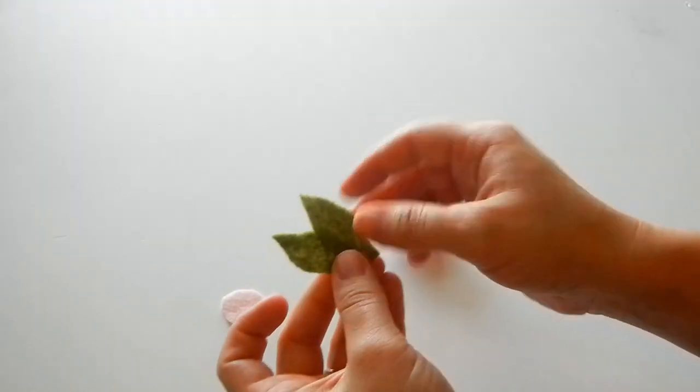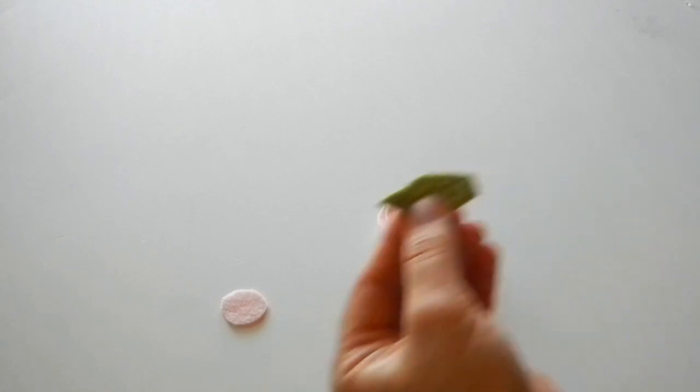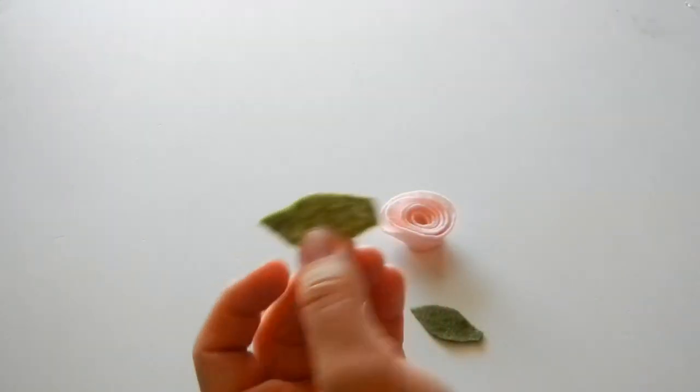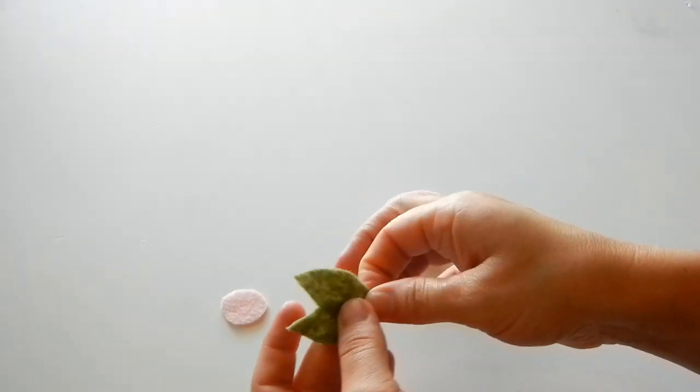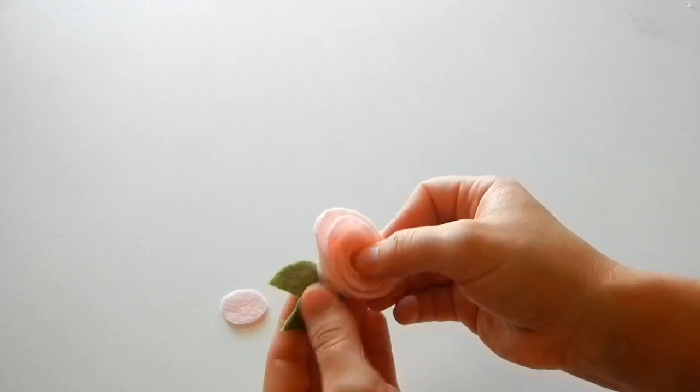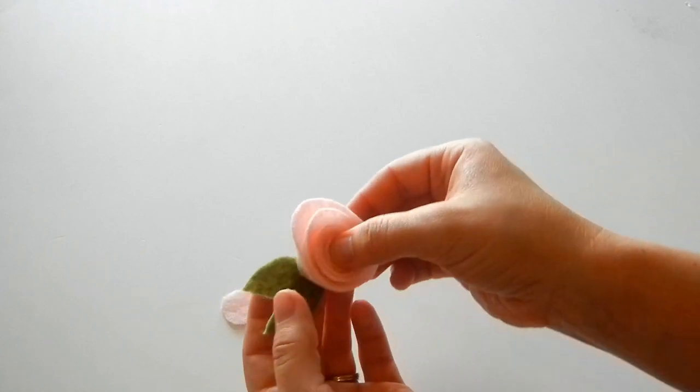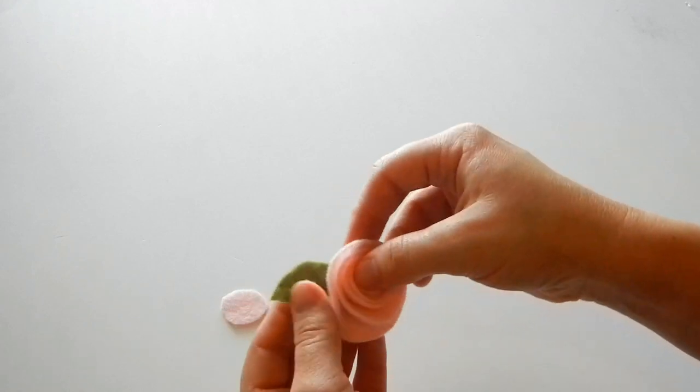So we have our two leaves, and as you saw they're really easy to cut out. Put a dab of glue on one and then combine them together, and then you just go to the side where you want the leaves to be on the flower.